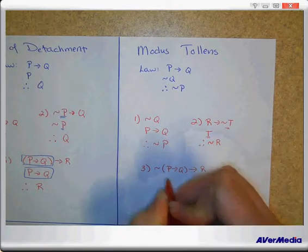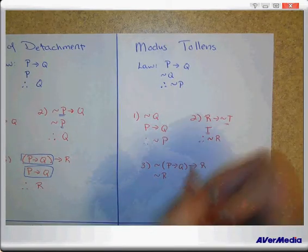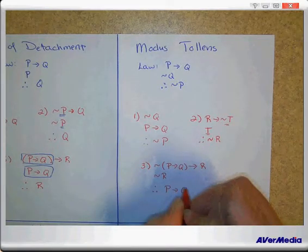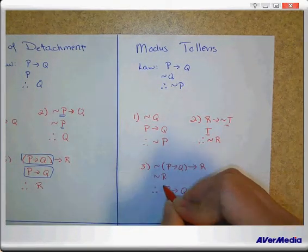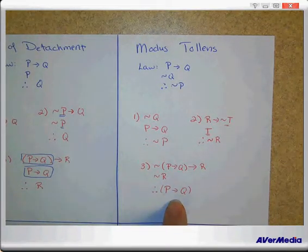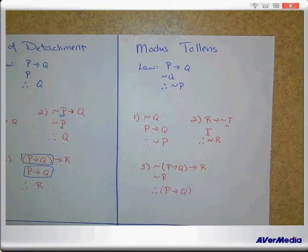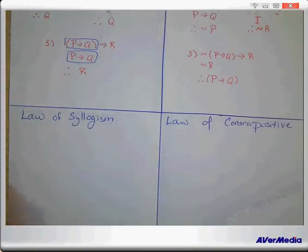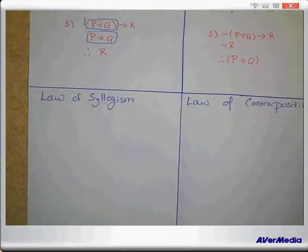All right, we have two more we have to do. Law of syllogism, or LS, because I can never pronounce it more than once, and law of contrapositive. This one, I want you to think mathematically first. If A equals B and B equals C, what do you know? Almost every one of you went straight to, well, A equals C.